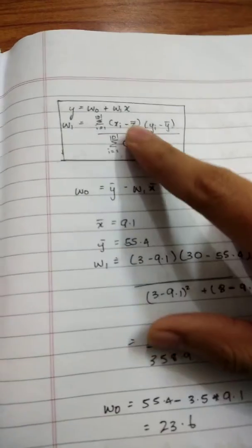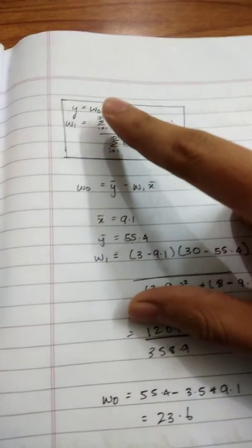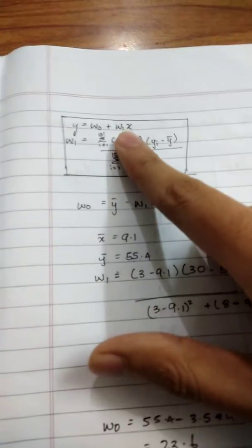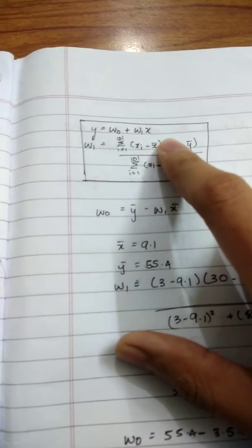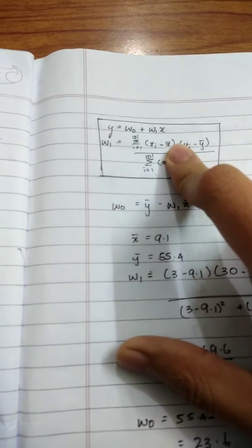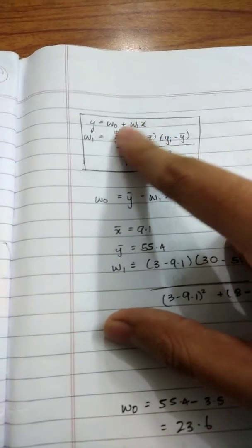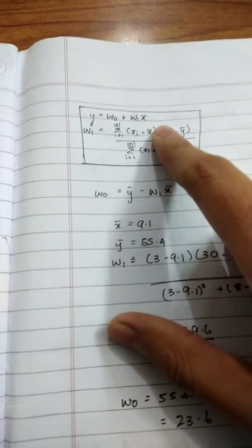The formula for finding Y is Y equals W₀ plus W₁X. Consider this to be in the form of Y equals MX plus C. So one of the formulas is Y equals W₀ plus W₁X.